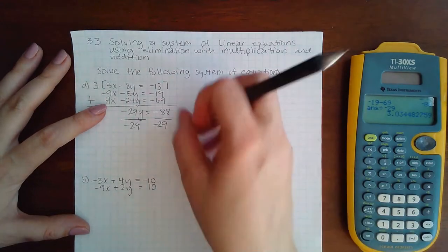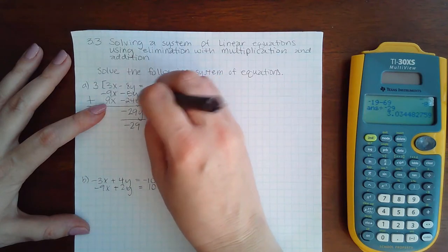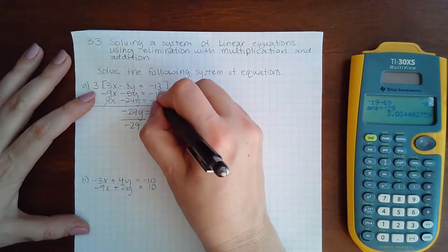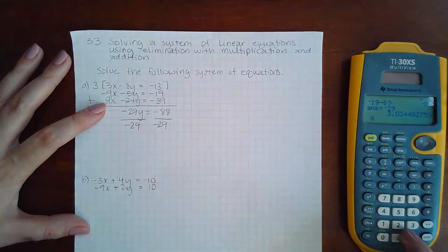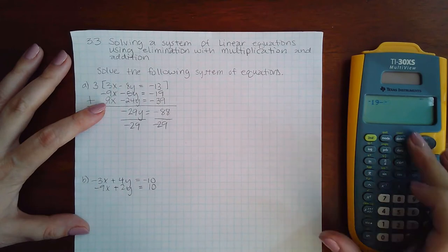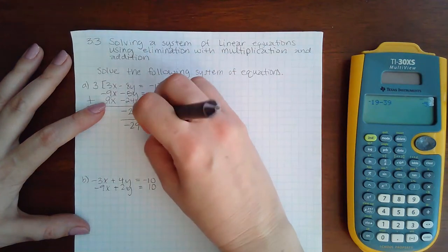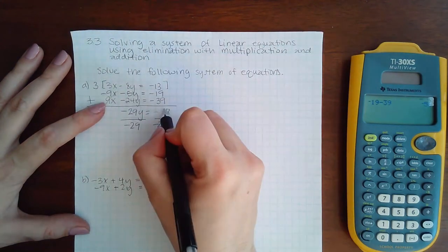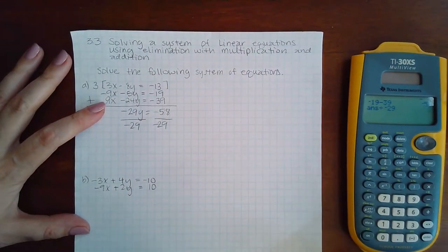Oh I know what I did. Three times negative 13 is not negative 69. Three times 13 is negative 39, is that right? Yes. So the negative 19 minus negative 39, or I'm sorry negative 19 plus negative 39, or just minus 39, is negative 58. There we go, and then if I divide that by negative 29 I get 2.